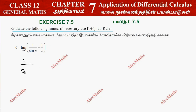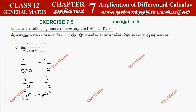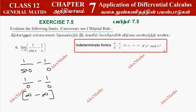If we substitute directly, 1/sin(0) gives 1/0, and minus 1/0. Since sin(0) = 0, we get 1/0 minus 1/0, which is infinity minus infinity. Infinity minus infinity is an indeterminate form.